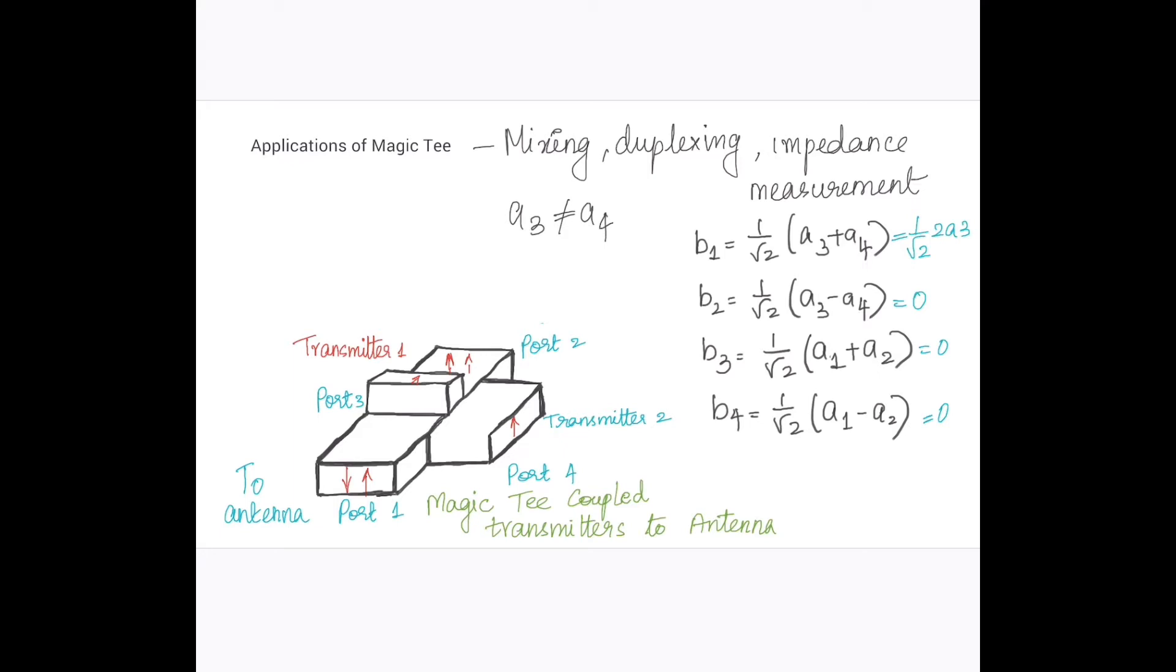Now suppose consider a typical example where we want double power to be delivered to the antenna more than which the transmitter can deliver. So here in this case a magic tee can be used to couple the two transmitters to the antenna in such a way that the transmitters do not load each other.